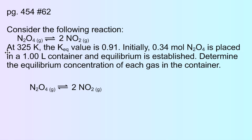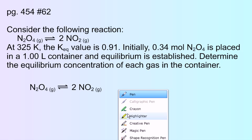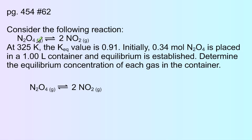We have dinitrogen tetroxide gas decomposing into nitrogen dioxide gas. That's an equilibrium system. We're given that at 325 Kelvin, KEQ is 0.91. We are told that initially 0.34 moles of N2O4 is placed in a 1 liter container, and equilibrium is established. We want to find the equilibrium concentrations of each gas in the container.